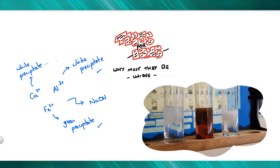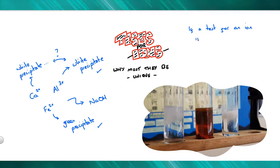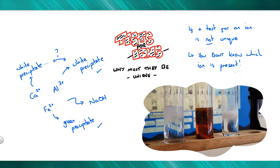So we've got two ions that give the same result — both calcium and aluminium. The key thing here is that if a test for an ion is not unique, you don't know which cation or which ion is present. Therefore you must find another test, another way, to find out which is which.